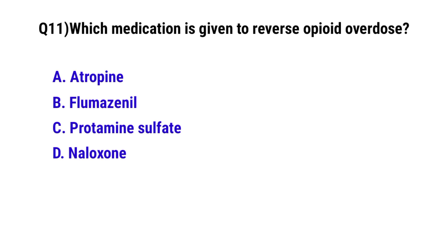Question No. 11. Which medication is given to reverse opioid overdose? The correct option is D: Naloxone.